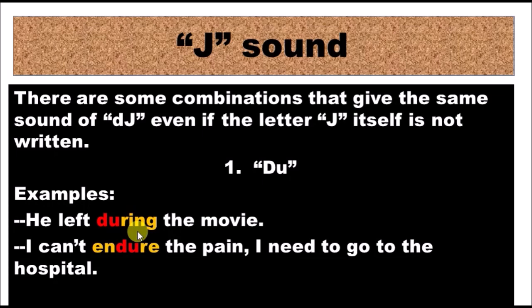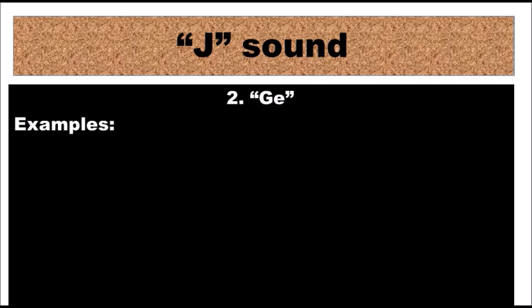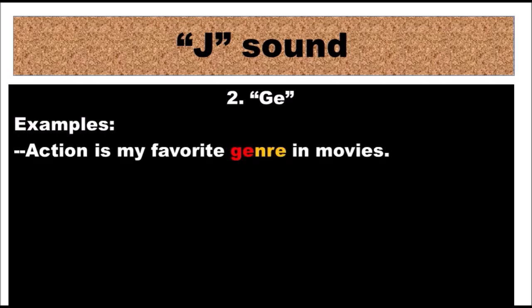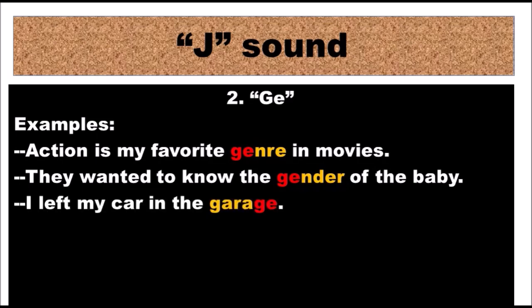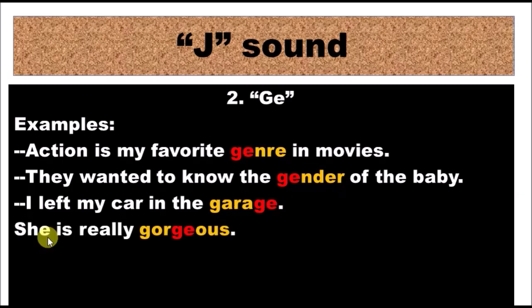The second case is 'ge'. For example: 'Action is my favorite genre in movies' — genre, not genre. 'They wanted to know the gender of the baby' — gender with a J sound. 'I left my car in the garage' — garage. Also: gorgeous — not gorgeous, but gorgeous.